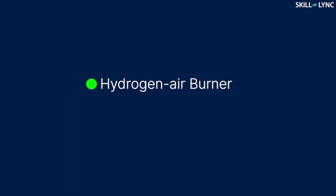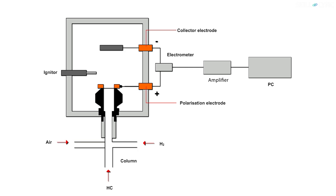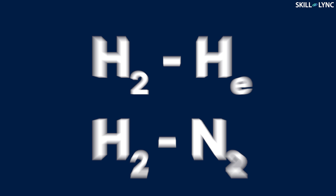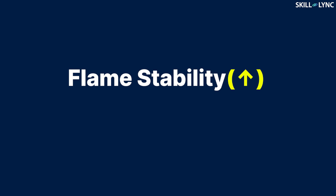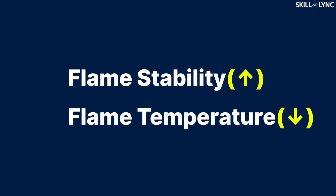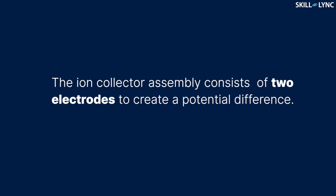When it comes to construction, the FID analyzer consists of a hydrogen-air burner and ion-collector assembly. There are individual inlets for hydrogen and air. Instead of hydrogen, hydrogen-helium or hydrogen-nitrogen mixtures can also be used for improving the flame stability and for decreasing the flame temperature. There is also a column through which the sample of the exhaust to be tested will be fed in. Then, there is an igniter which is used for ignition.